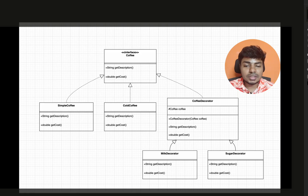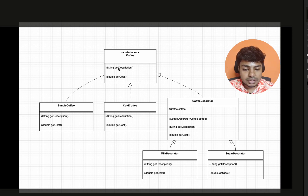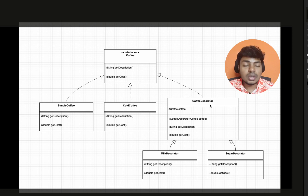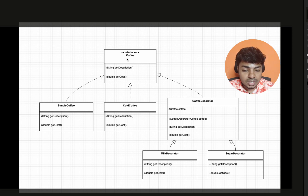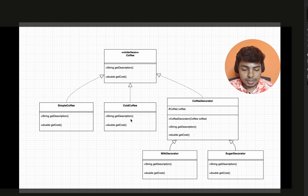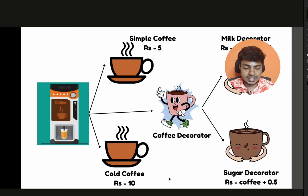Now we look at the UML diagram, created as a class diagram. There is a coffee interface. There is a simple coffee and cold coffee. There is an extra decorator. We add different decorators — milk, cream, sugar. Coffee is used as a decorator. Coffee is an object, and on top of that object we add the extra attributes. The get description and get cost methods are the same in both the interface and the decorator.